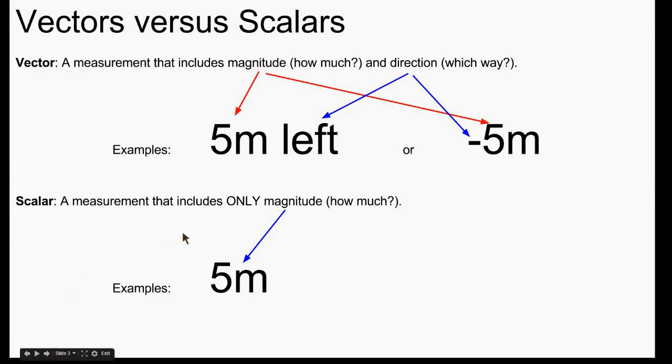So obviously those have some differences to them, position and distance. So a vector is something that has magnitude and direction. So when we say something is 5 meters left, we are using a vector by giving a magnitude how much, 5 meters, and saying the direction as left.